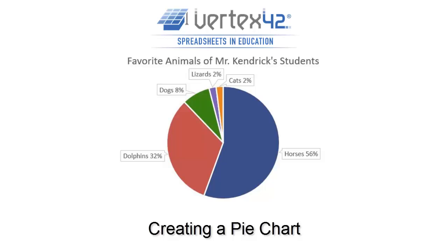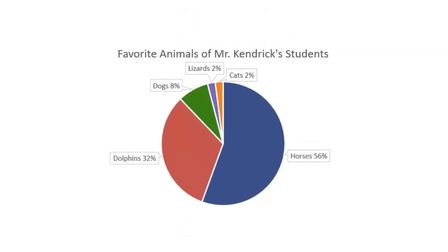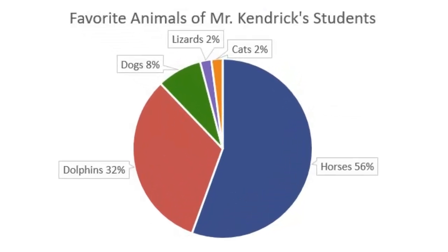A pie chart shows how different categories make up a whole. For example, you could survey students about their favorite animal and make a pie graph of the results. Out of the students in this survey, you can see that more than half prefer horses, and about a third prefer dolphins. The remaining students had a few different favorite animals.